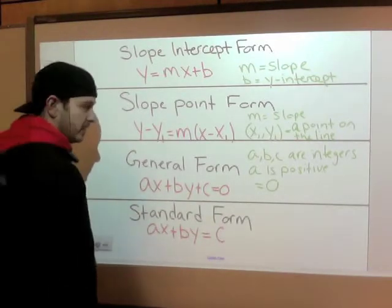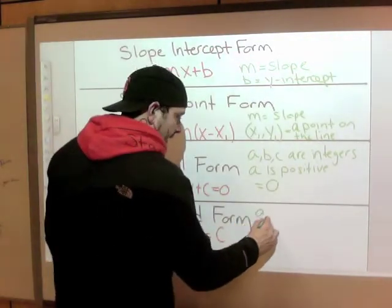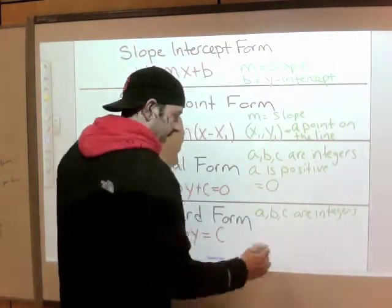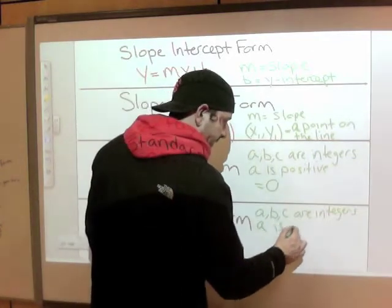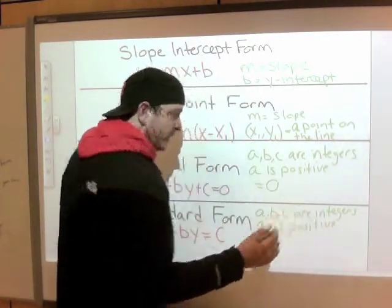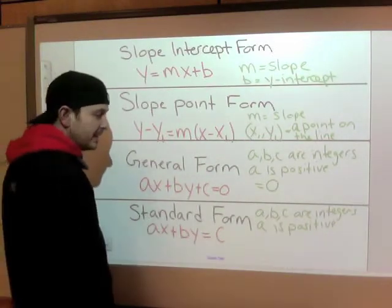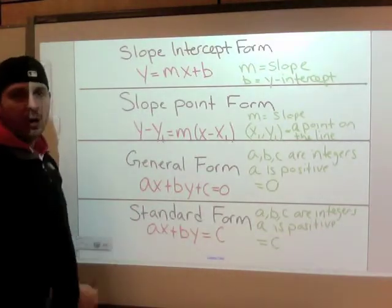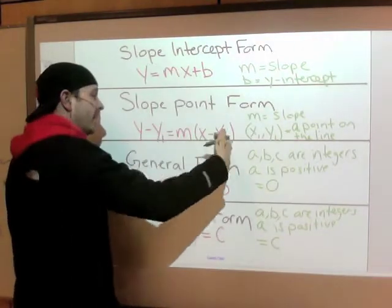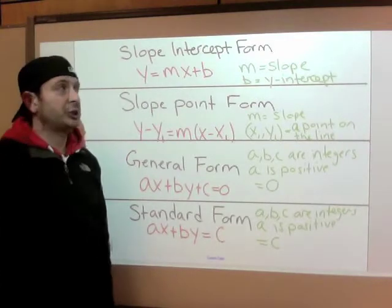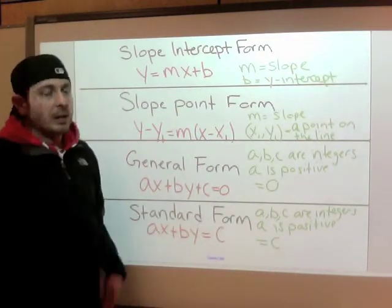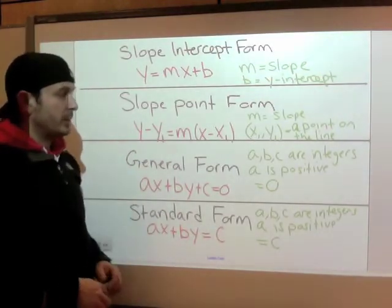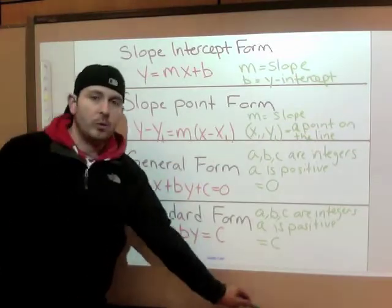Standard form is very, very similar. A, B, C are integers — nothing changes there. A is positive — nothing changes there. What changes is look where that C went: this one will equal C. Only the X's and the Y values are on the left side. So make sure you can decipher which form is which by name, because the equations are on your formula sheet but not given with the name. That's why you need to know the name in case a question asks you to put it into one form or the other.